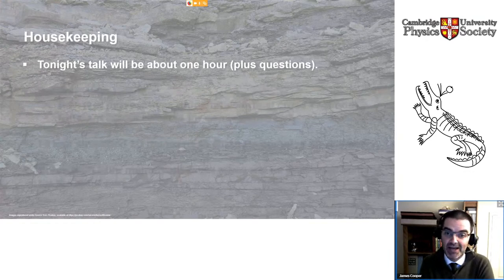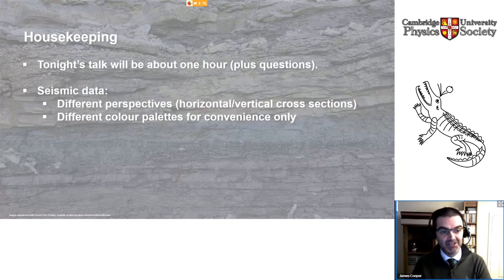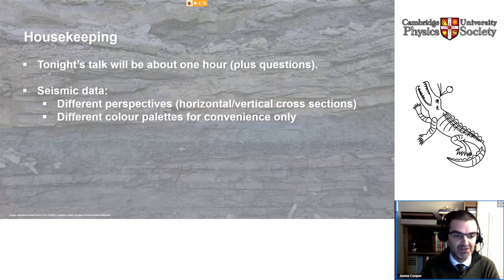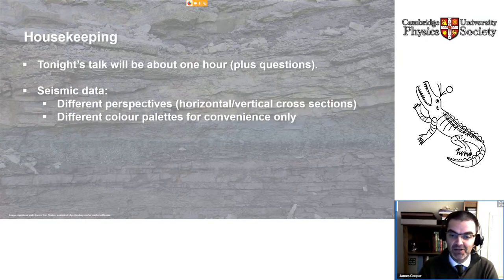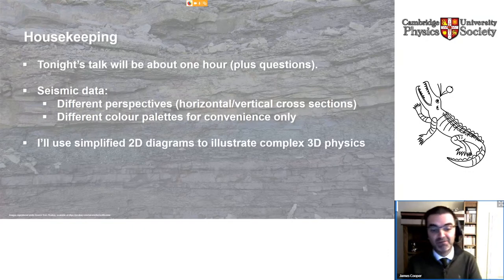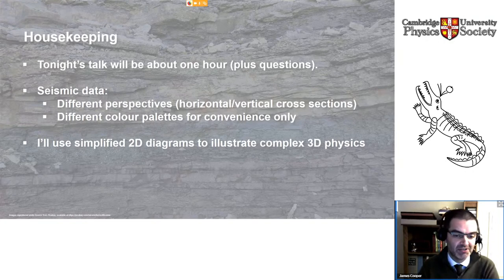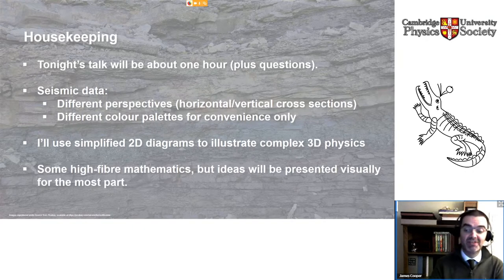A bit of housekeeping. The talk will be about an hour, plus questions during or after the talk. I'll be showing lots of examples of seismic data acquired in 3D, but due to the restrictions of a 2D presentation, I'll show horizontal and vertical cross-sections. I'll render data in different color palettes — grayscale and various other colors — with no particular agenda; don't read too much into changes in color palette. I'll use simplified 2D diagrams to illustrate complex 3D physics, and I'll include some high-level mathematics for those interested.